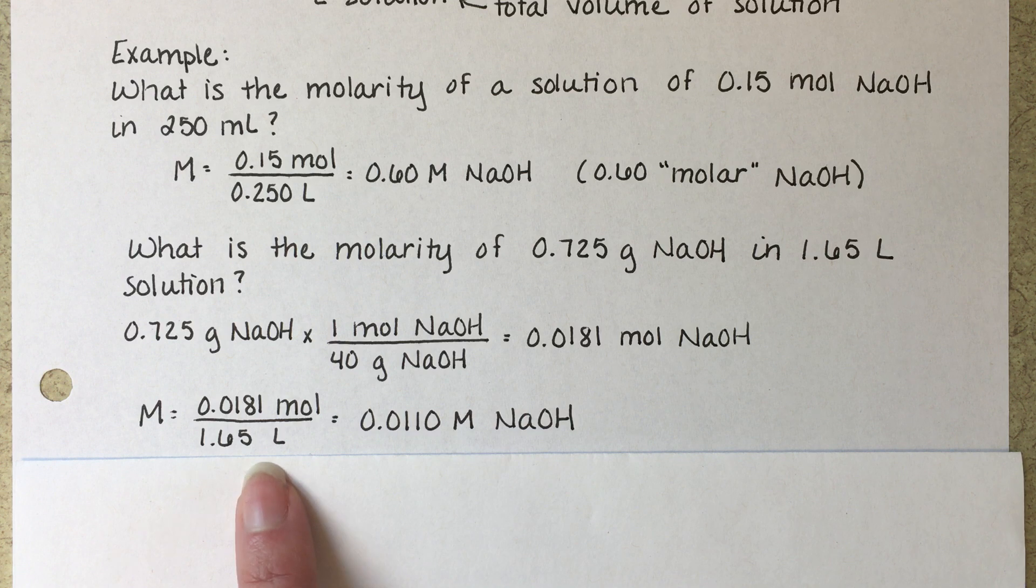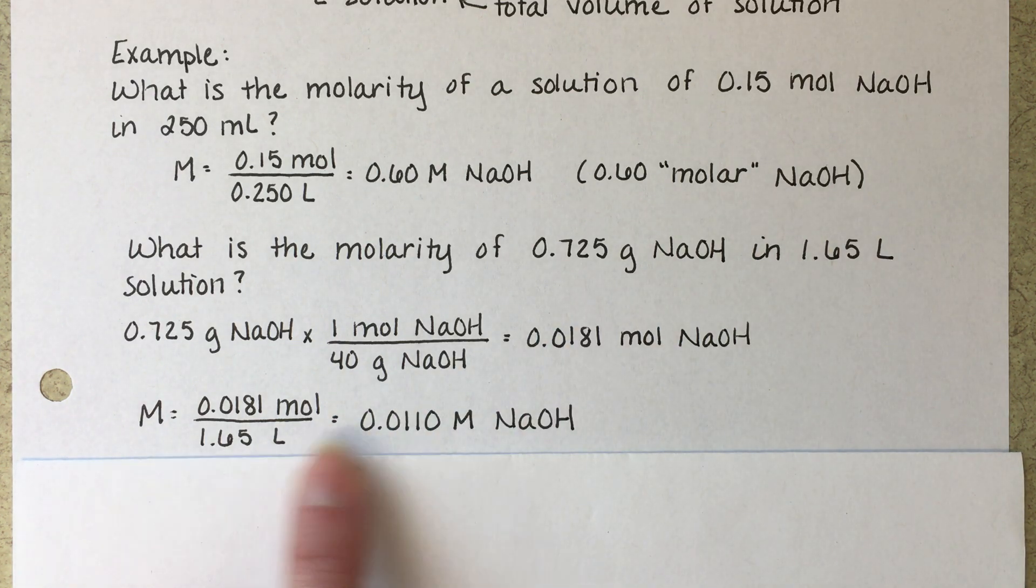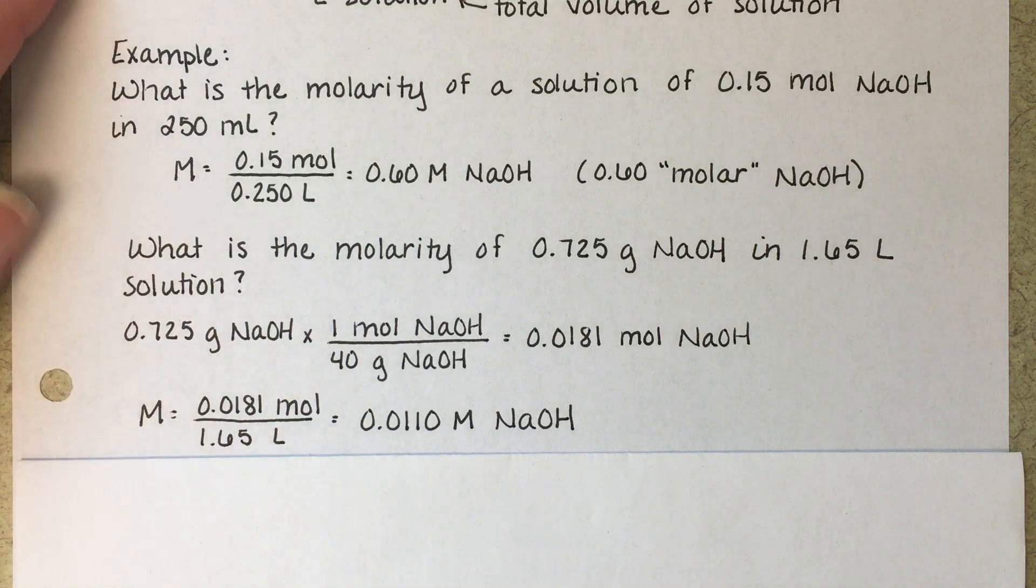divided by the volume of solution. This time it's given to us in liters, so it's in the right unit. We can plug it right in and we get 0.0110 molar NaOH.